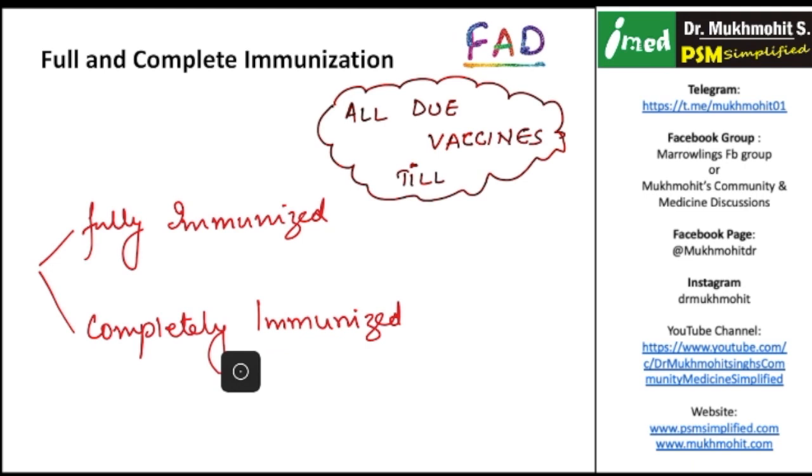What do we mean by a fully immunized child and what is a completely immunized child? A fully immunized child is a child who has received all due vaccines till one year of age. A completely immunized child is a child who has received all due vaccines till two years of age.